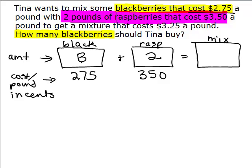So how many pounds of berries are going to be in this mixture? I have B pounds plus 2 more pounds. I've got B plus 2 pounds total. So in other words, if I had 10 pounds of blackberries, that would give me 12 pounds in the mixture once I added the 2 pounds of raspberries. Now what about the mixture? Do we know the cost of the mixture? Well, the cost of the mixture is 325 a pound.